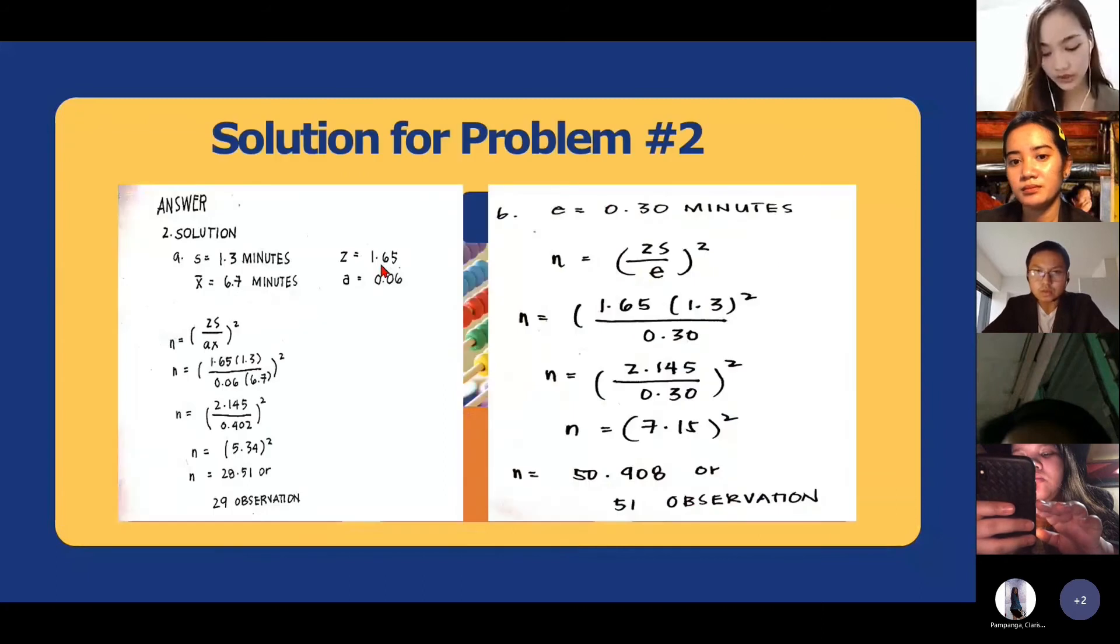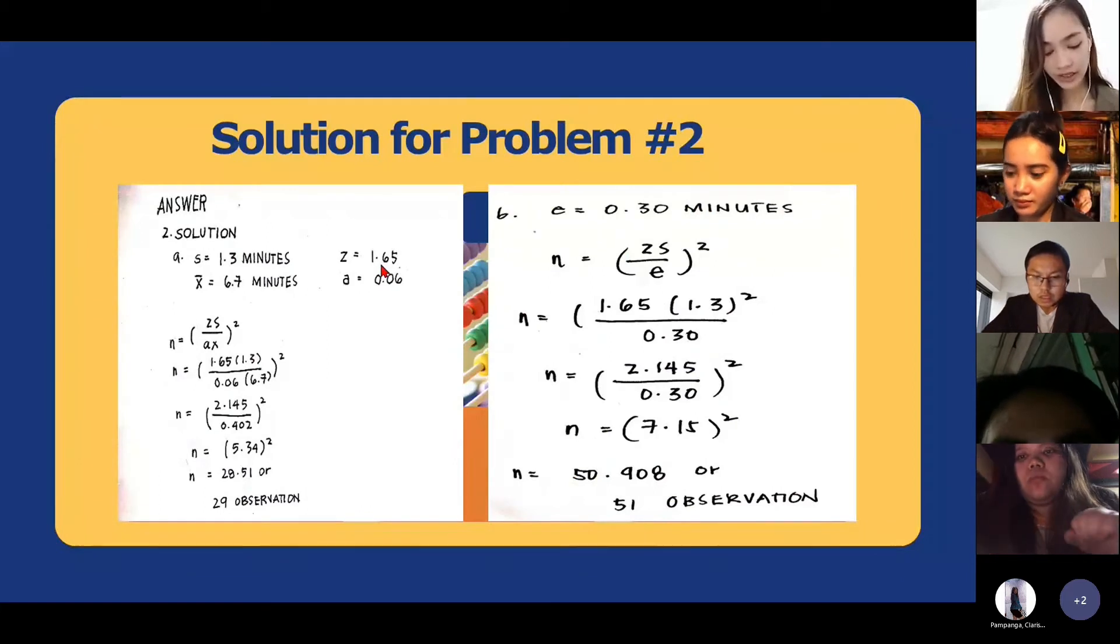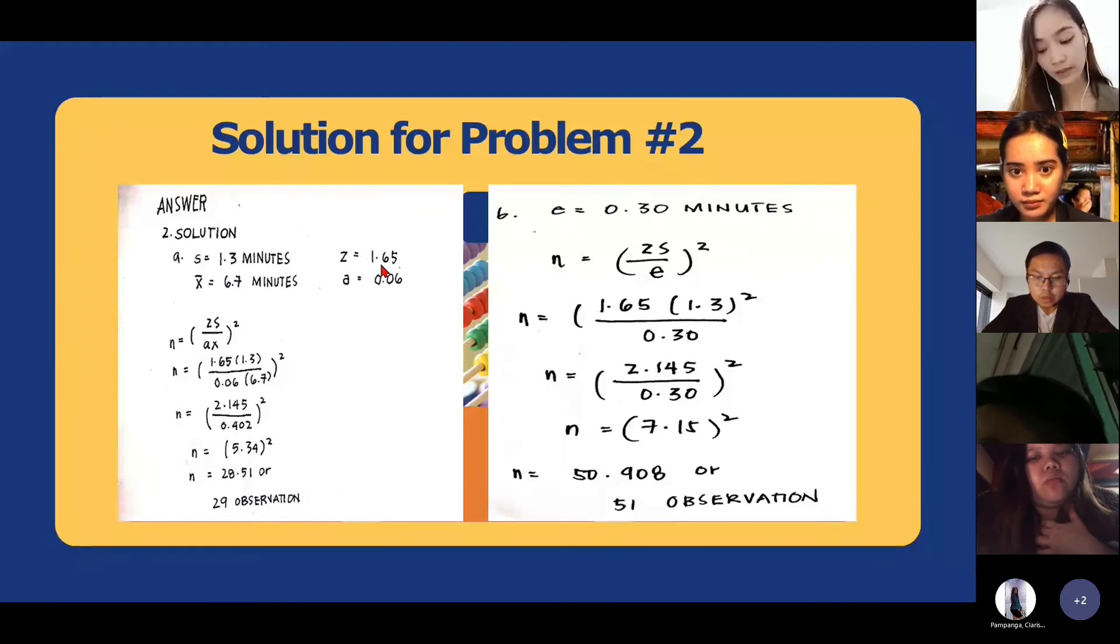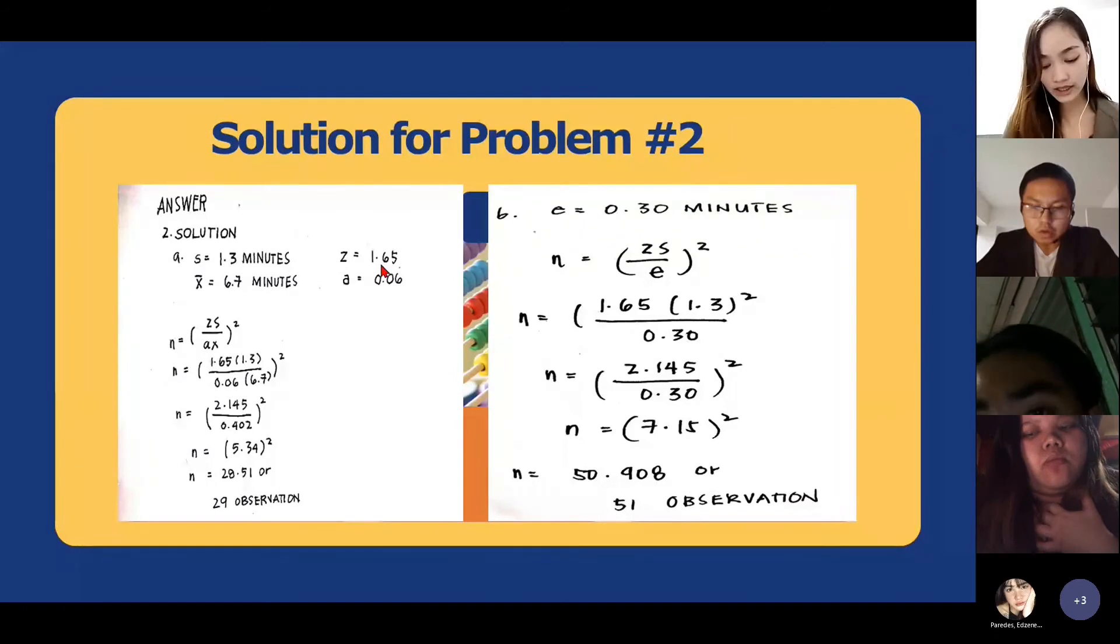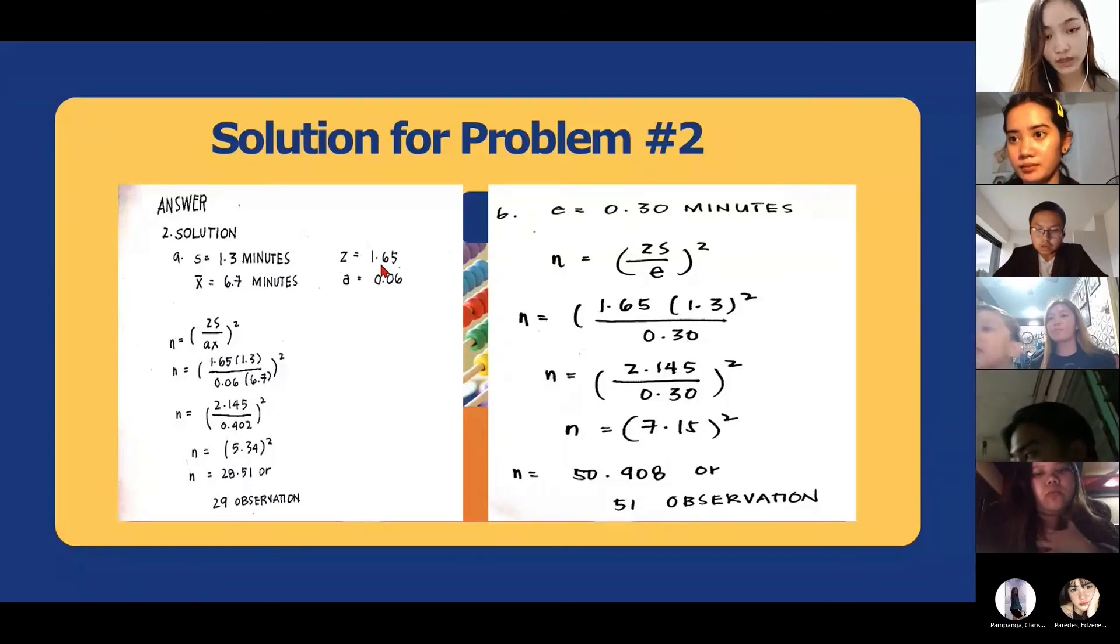So first, we should take down all the given numbers. First one is the directed accuracy percentage, which is 1.3 minutes. And the next one is the x bar, the 6.7 minutes is the sample mean. And the next one is the number of normal standard deviations needed for the desired confidence is 1.65. And the last one is the sample standard deviation, the 0.06.